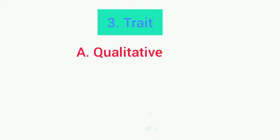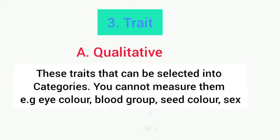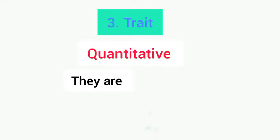For qualitative traits, bear these things in mind: these are traits that can be sorted into categories — you can classify them into various classes. You cannot measure them. For example, you cannot measure blood group, but you can say it belongs to blood group A, B, or O. Color is either yellow or another color; sex is either biologically male or female — it is either this or that. You cannot measure that, which is why it is called a qualitative trait.